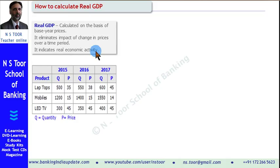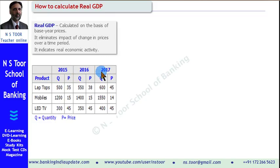And this we are going to do on the basis of this data. This data is given relating to the years 2015, 2016, and 2017, and it is for 3 products. We are assuming, for the purpose of making the exercise simple, that in this economy only 3 products are produced.